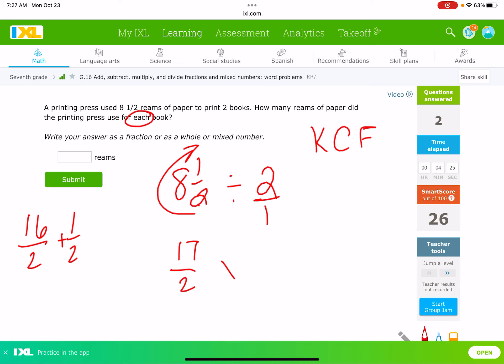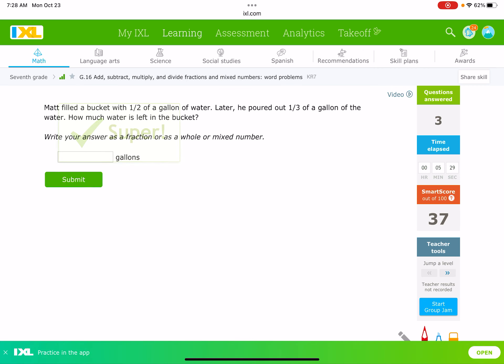And then I want to change division to multiplication. Remember I'm doing keep, change, flip. And then I want to flip the second fraction. Instead of dividing by 2, dividing by 2 is the same thing as multiplying by ½. Now I can multiply straight across. I don't have to have a common denominator. I can simply just multiply straight across. 17 times 1 is 17. 2 times 2 is 4. And it says write your answer as a whole or mixed number. So, how many times does 4 go into 17? Well, 4 times 4 is 16. So, 16 is only 1 away from 17. So it would be 4¼. So I'm going to put in 4¼ here.